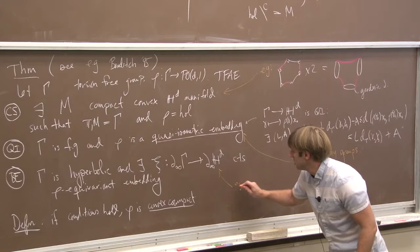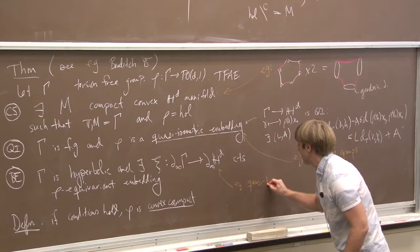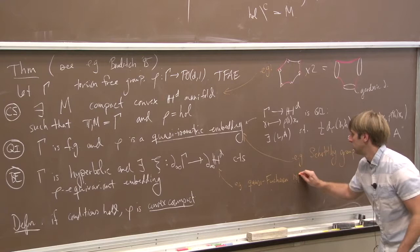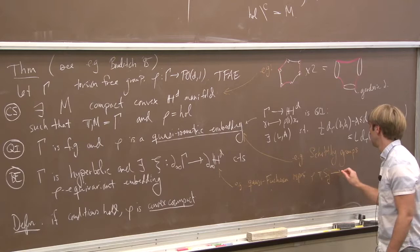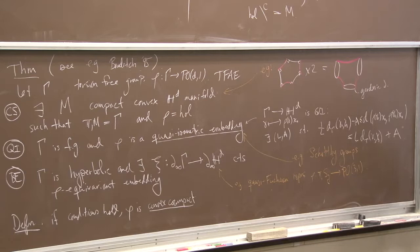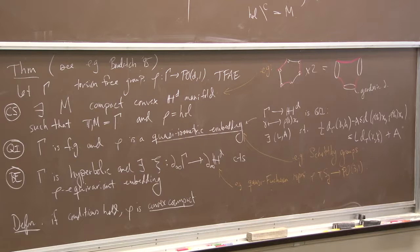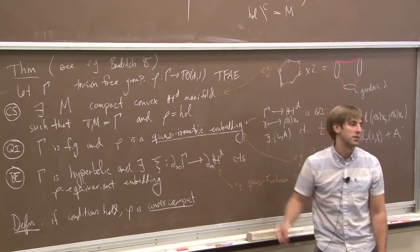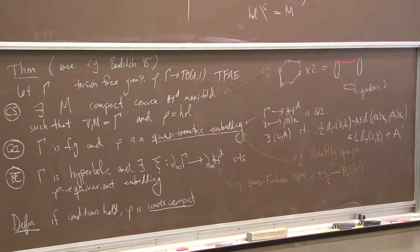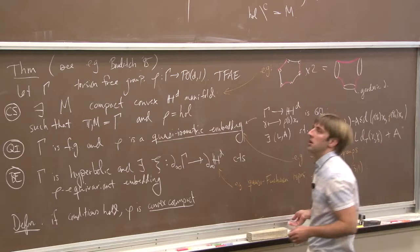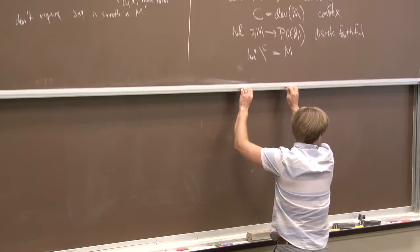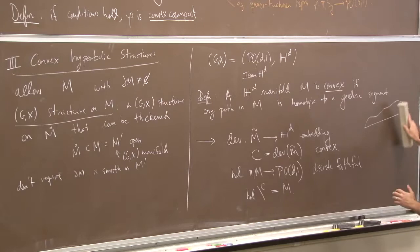And for boundary-embedded, one class of nice examples where it's easy to see this are the quasi-Fuchsian surface group representations. In this case, let's stick to dimension three. A quasi-Fuchsian representation is a quasi-conformal deformation of a Fuchsian representation. Fuchsian representations are obviously boundary-embedded. And when you deform them by a quasi-conformal homeomorphism, you deform that boundary embedding. So you still see it very concretely — you still see the boundary of the group in the boundary of hyperbolic space.